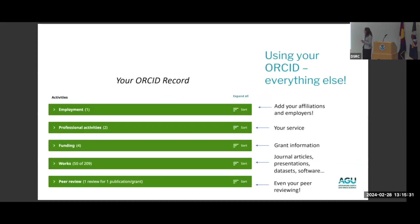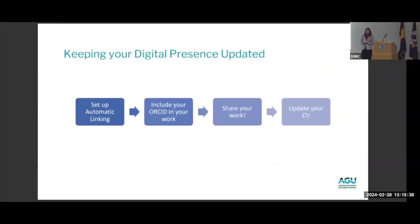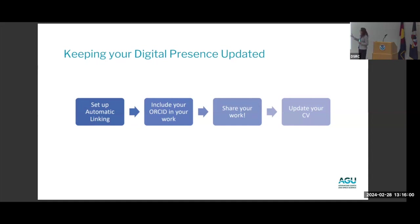Once you've built out your ORCID record, you can include information about your employment, professional activities, and even your peer reviewing. Crucially — and this is what I think is so useful about ORCID — you can set up automatic linking and updating. Once you include your ORCID in all of your work, you can set up tools so your digital CV is maintained automatically by the infrastructure connections we've built in science. As someone who had to set a calendar reminder to update their professional achievements every month because they kept forgetting things, this is really meaningful.